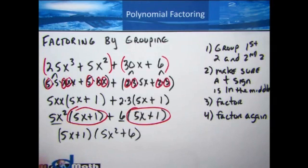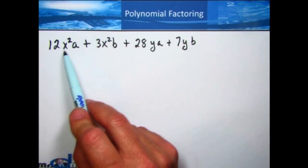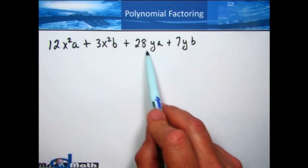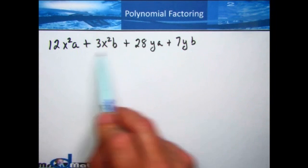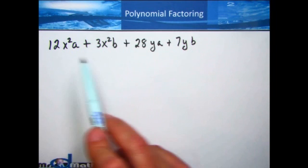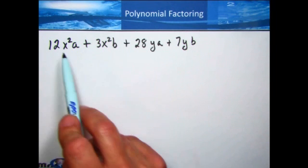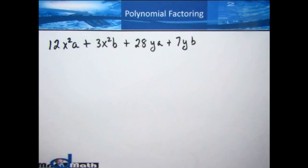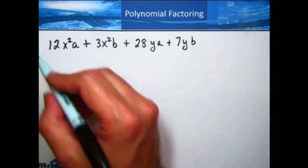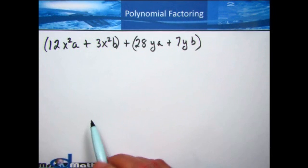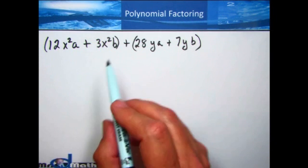Let's take a look at another example. We're going to factor 12x²a + 3x²b + 28y + 7yb. None of those are like terms — it is a four-term polynomial like the last one, but nothing is obviously the same. However, you can see that the first two terms both have an x² in common, so let's group the first two and second two terms together.